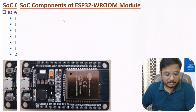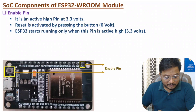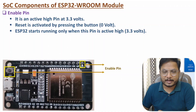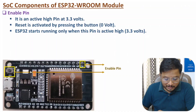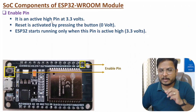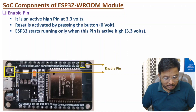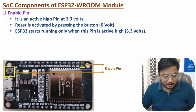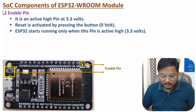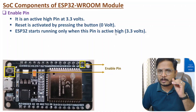Next SoC component is the enable pin. We have a push button connected to the enable pin. Usually this enable pin is an active high pin, so in the usual condition it will be at 3.3 volts. If you want to reset this processor, you press this button, which pulls this pin to zero volts and starts to reset the processor. When you start the ESP32, the enable pin will be active high at 3.3 volts.